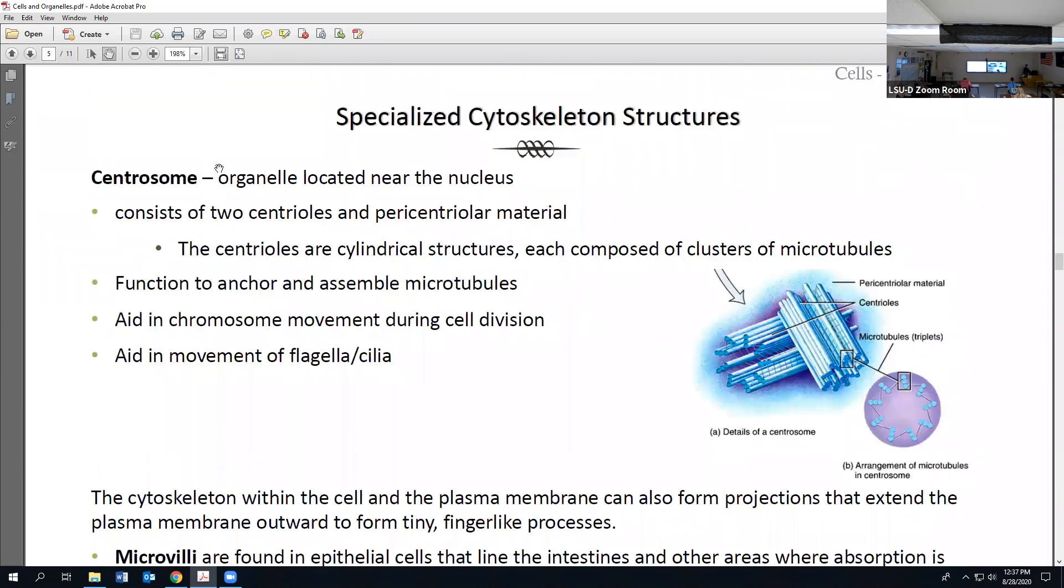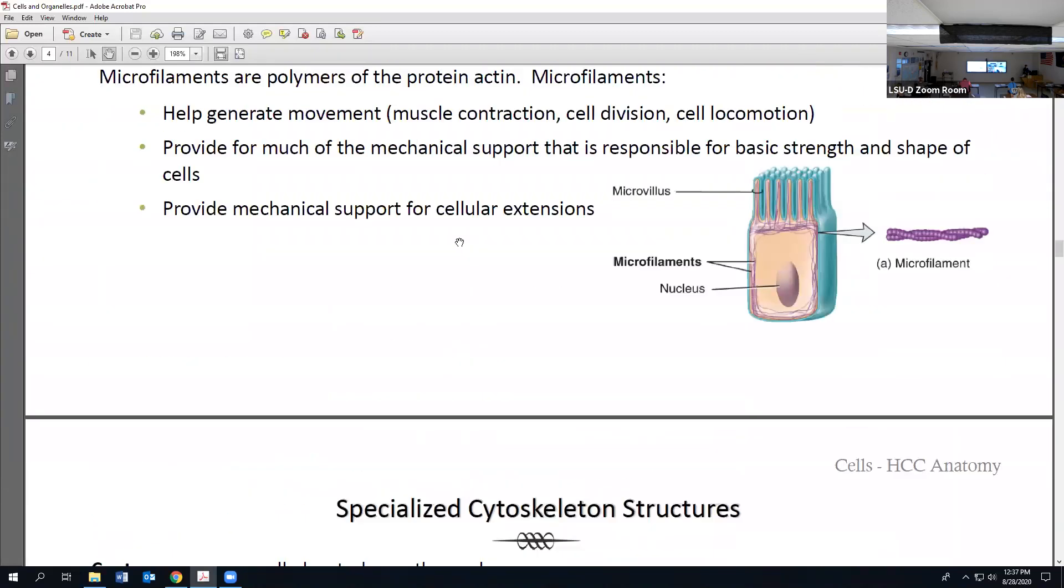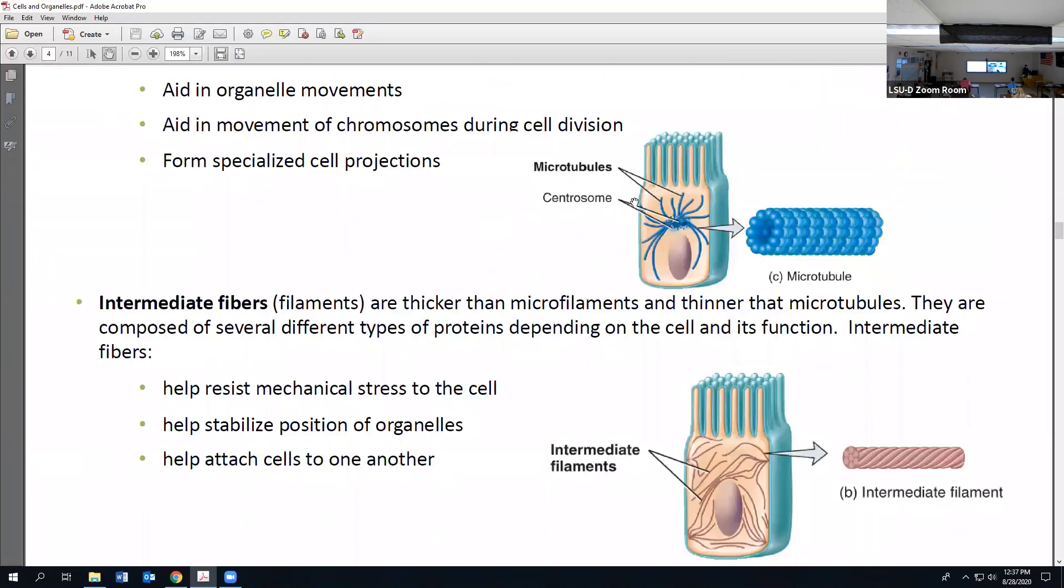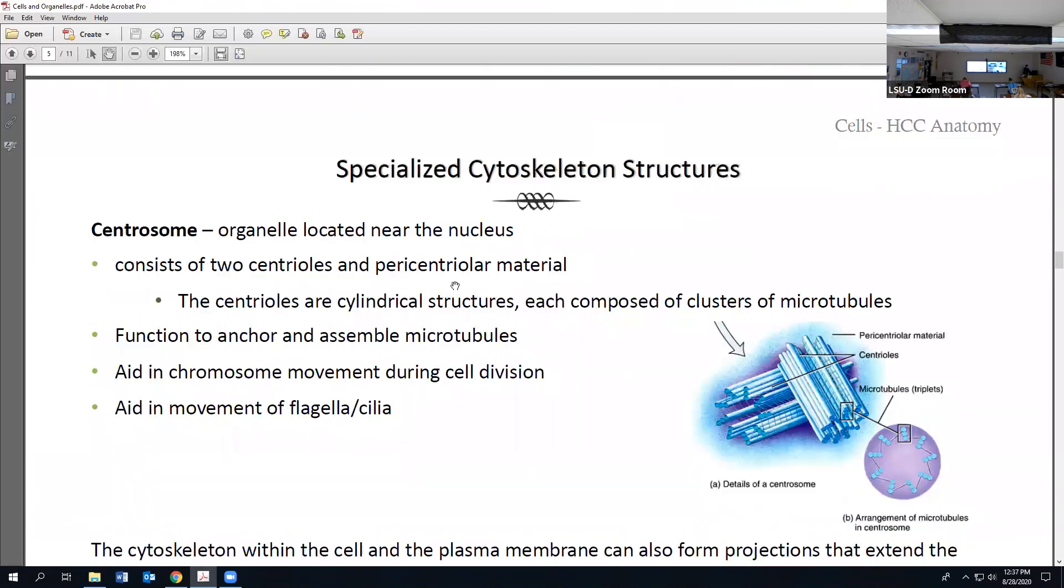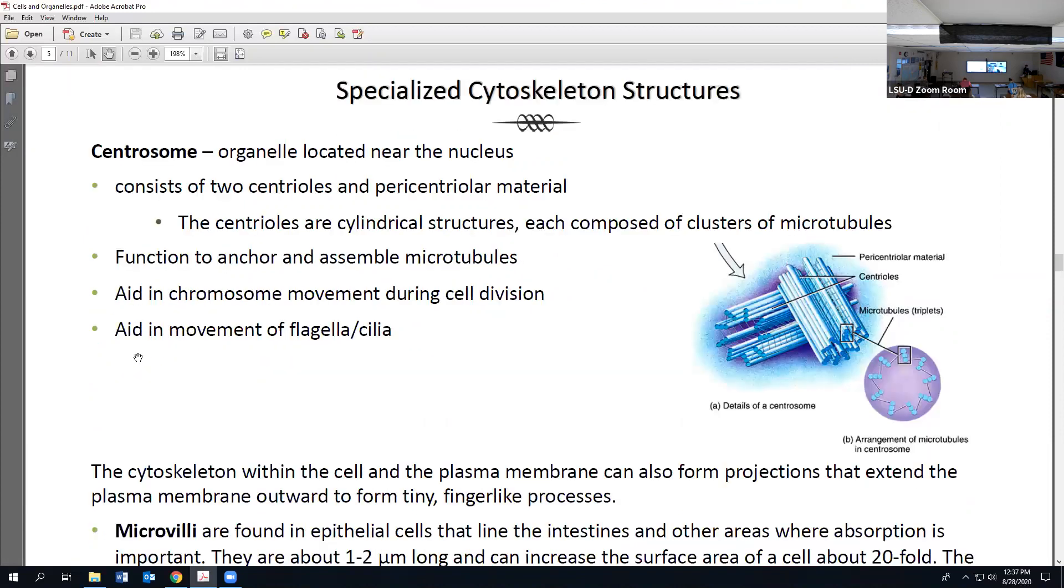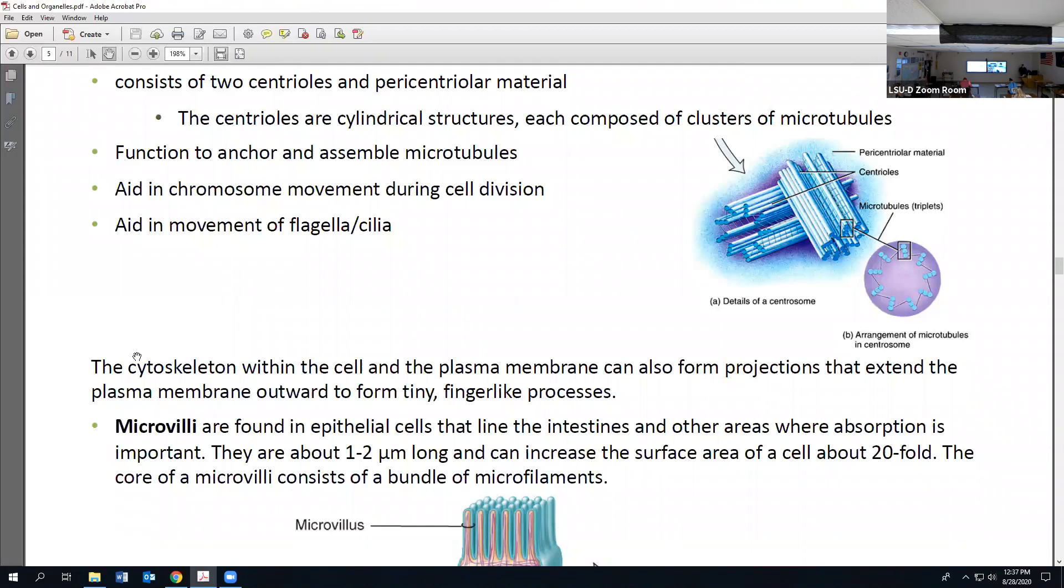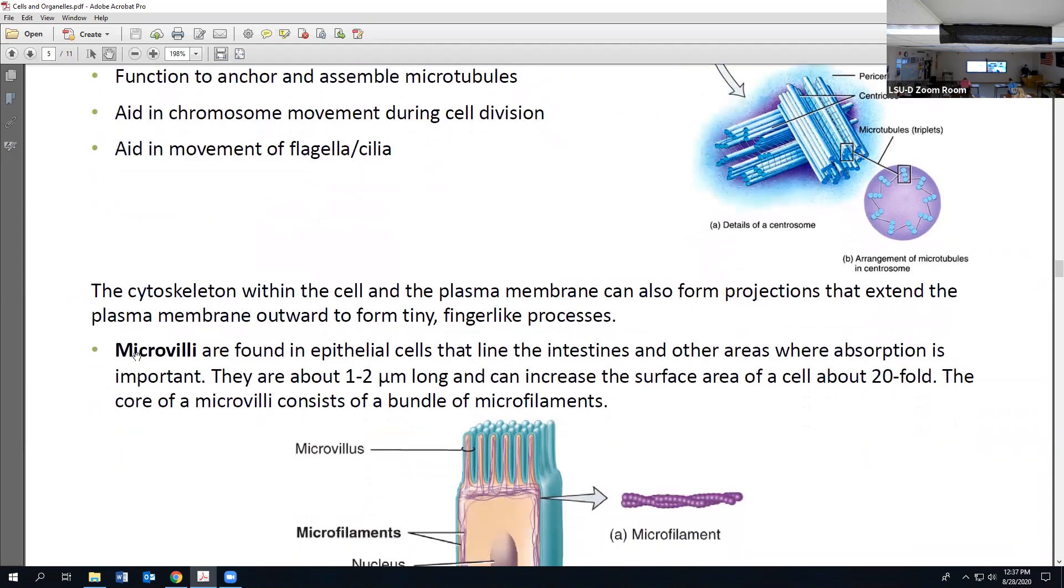Let's talk about centrosomes, which we mentioned on the previous page. They can be described as organelles located near the nucleus. They're fairly complicated even though they're really small. Their anatomical makeup is a bunch of protein stuff that really flies over the heads of students, so I'm not even going to really get into it. What I would focus on for study purposes would be those three bullets on what they do. They help anchor and assemble microtubules, aid in chromosomal movement during cell division, and help with the movement of flagella and cilia.